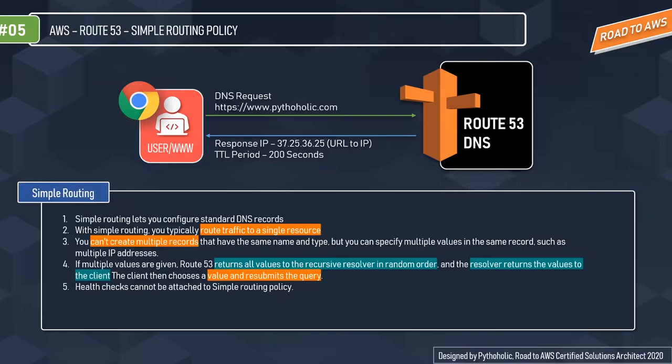The resolver returns the values to the client, and the client chooses which value to use and submits the request. For example, if there are three IP addresses in the record of the same name, you will get one out of those three at random. Remember, health checks cannot be attached to a simple routing policy.